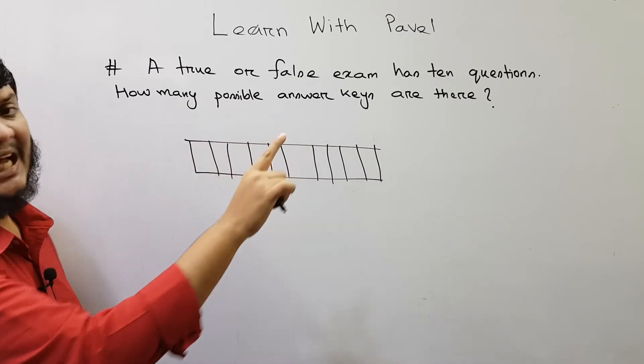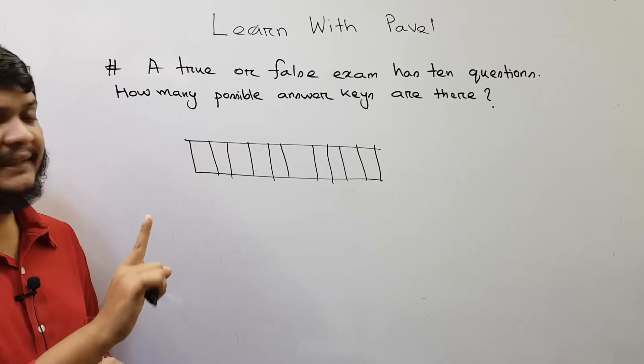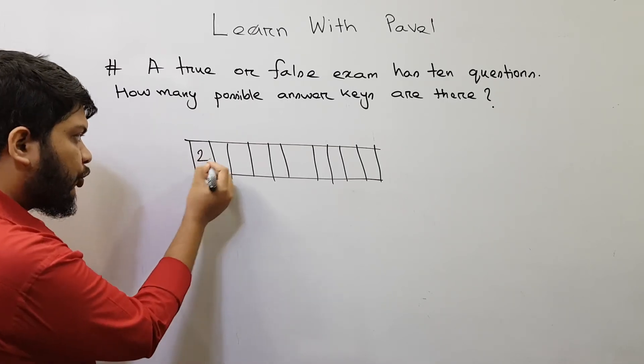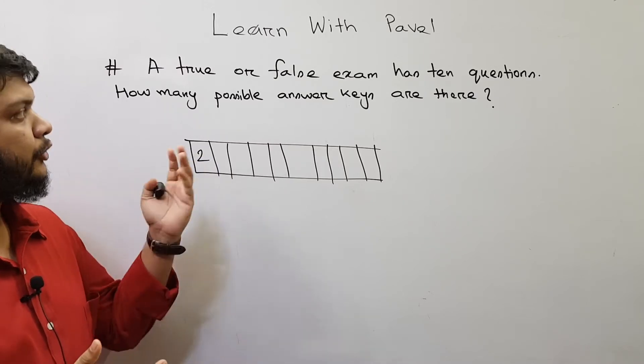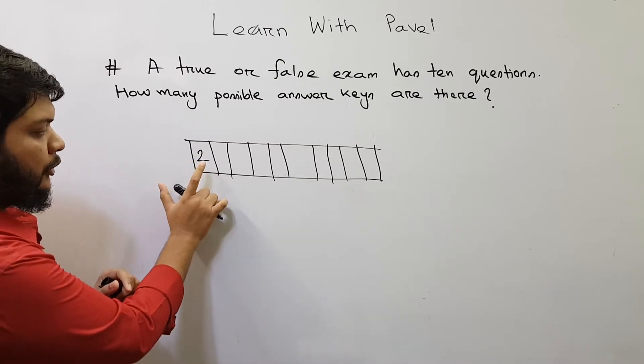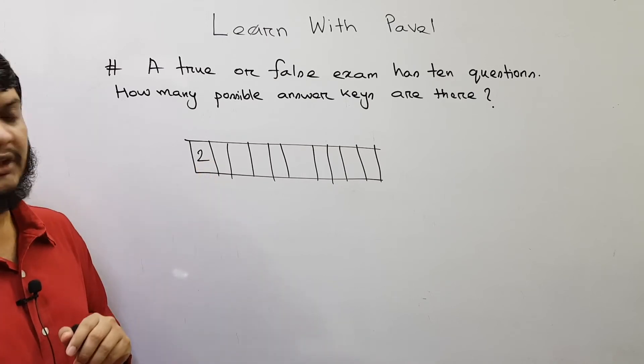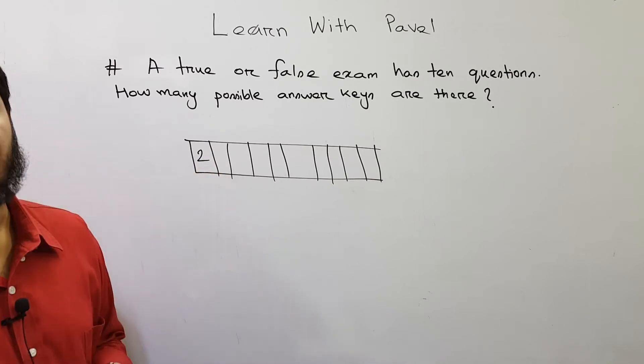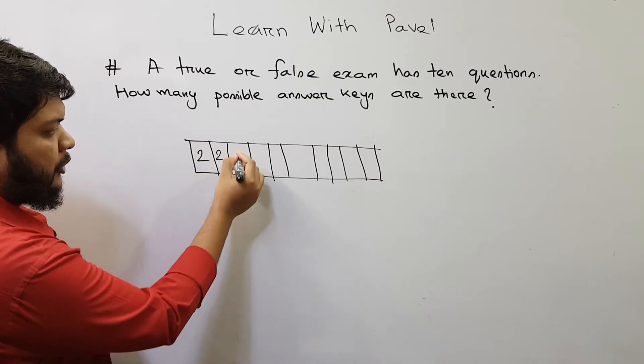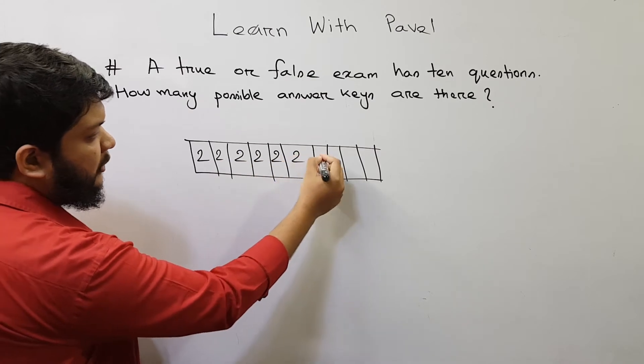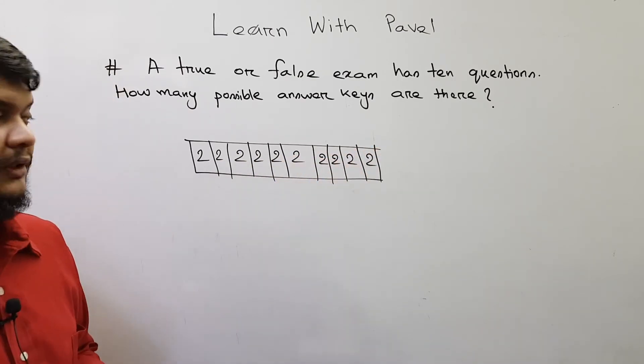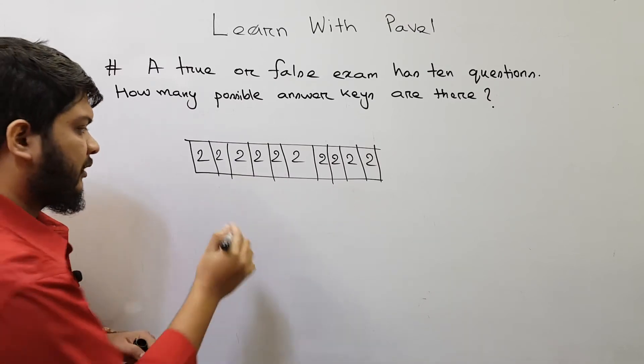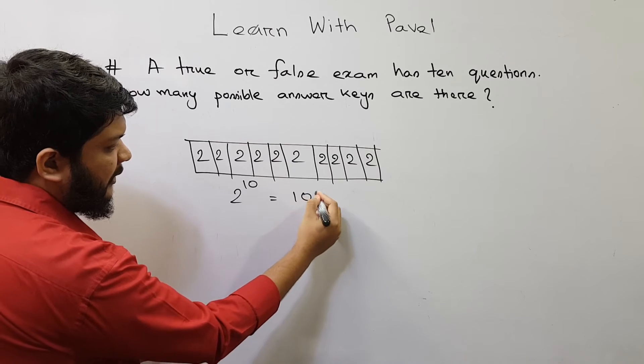Since this is a true false exam, how many possible answers are there for the first question? There are two options because the answer can be either true or false. That means there are two possible answers for the first question. Similarly for the second one, how many options are there? Two options. So in this way all the questions have two options each. Finally we multiply all of them. We will get 2 to the power 10 which is 1024.